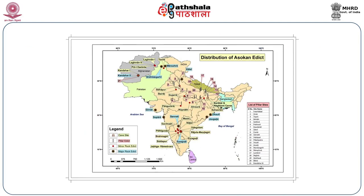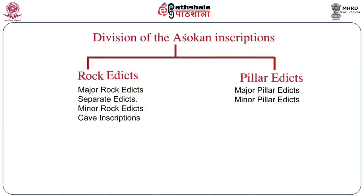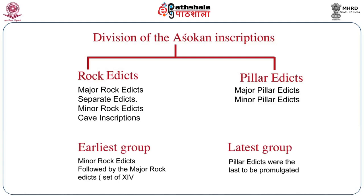Here is a map showing the distribution of the Ashokan records. They have been found all over the Indian subcontinent, right from Afghanistan to Karnataka, and in Orissa, Dhauligiri, Jaugada, and up to Kalsi in UP. The Ashokan inscriptions can be broadly divided into rock edicts and pillar edicts. Among the rock edicts: major rock edicts, separate edicts, minor rock edicts, and cave inscriptions. The pillar edicts are divided into major and minor pillar edicts. The earliest group are the minor rock edicts, followed by the major rock edicts, and the latest are the pillar edicts.